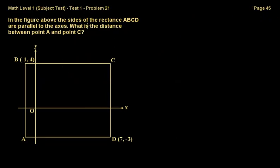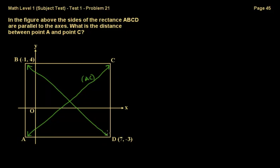Problem 21 states that in the figure above, the sides of rectangle ABCD are parallel to the axes. What is the distance between point A and point C? The diagonal AC equals diagonal BD, because in a rectangle both diagonals have the same length. So it's easier to calculate BD since we already know points B and D. Therefore AC equals BD.